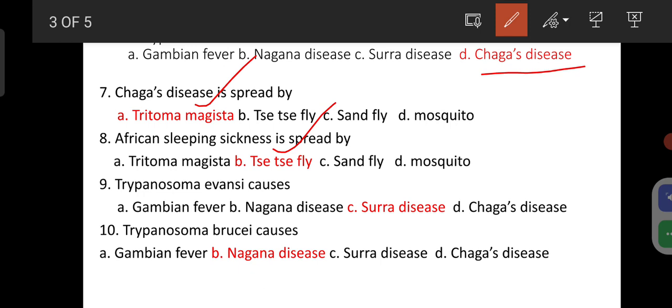Trypanosoma evansi causes Surra disease. Trypanosoma bruci causes Nagana disease.